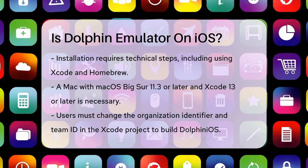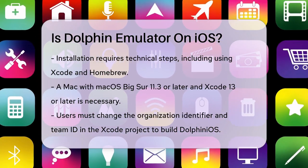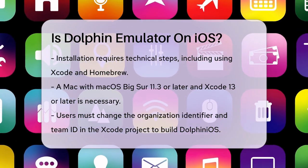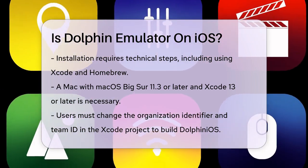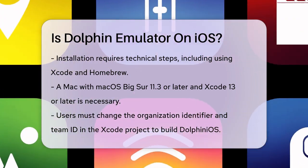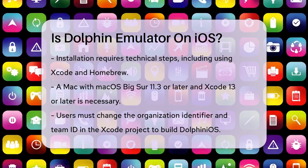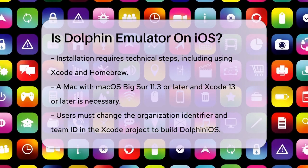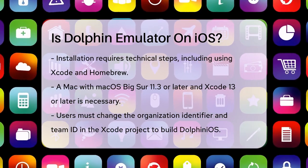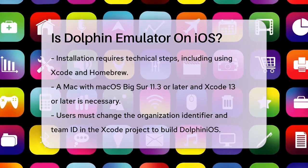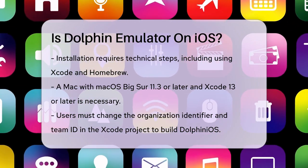To install Dolphin iOS, you'll need a Mac running macOS Big Sur 11.3 or later, Xcode 13 or later, and Homebrew or another package manager. You'll have to install specific tools and change the organization identifier and team ID in the Xcode project before you can build and run Dolphin iOS on your iOS device.